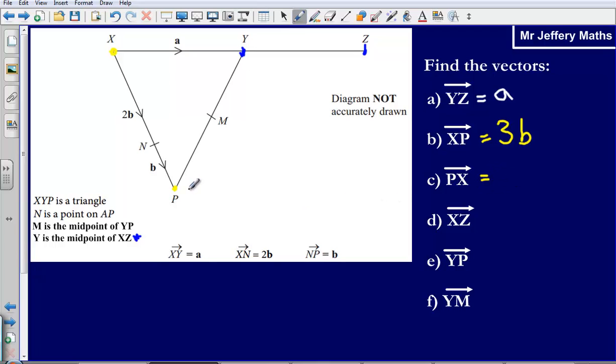Let's take a look at the next one, PX. Now I'm just going in the reverse direction to which I just came. I know that XP is 3b, so to go from P to X, that's simply going to be negative 3b, which is going in the reverse direction.